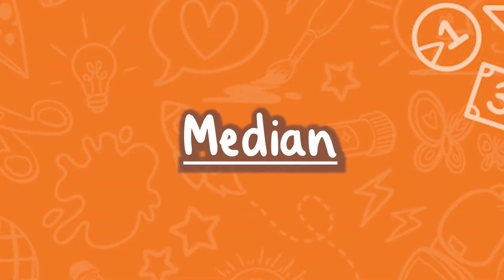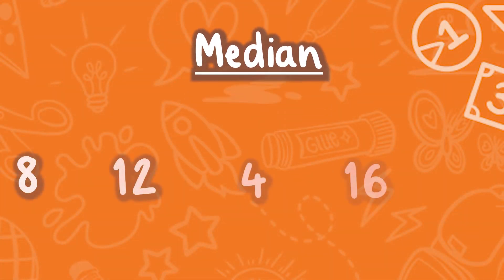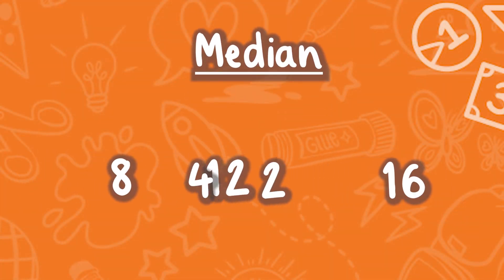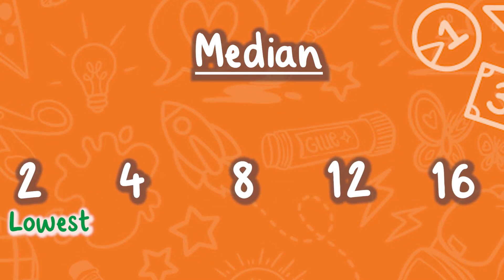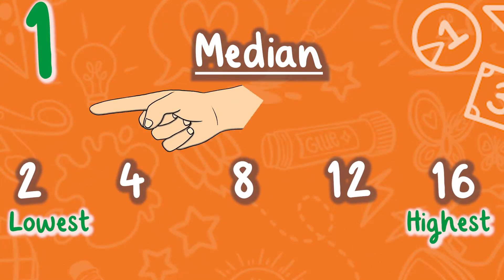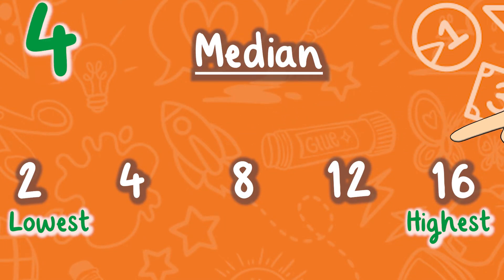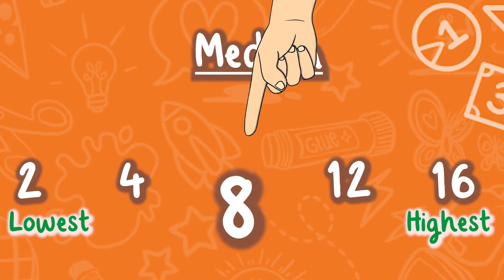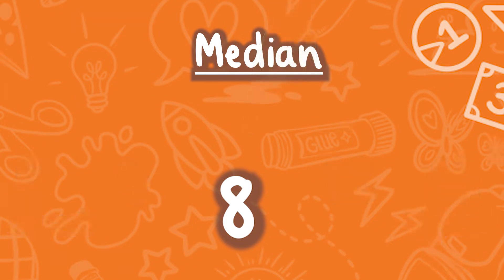To calculate the median, you place all the numbers in your set of data in order, from lowest to highest. You then count how many numbers there are in a set of data to find the halfway point. The number exactly at the halfway point, as you have set them out lowest to highest, is the median.